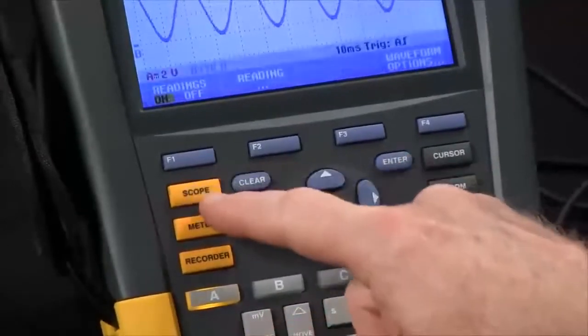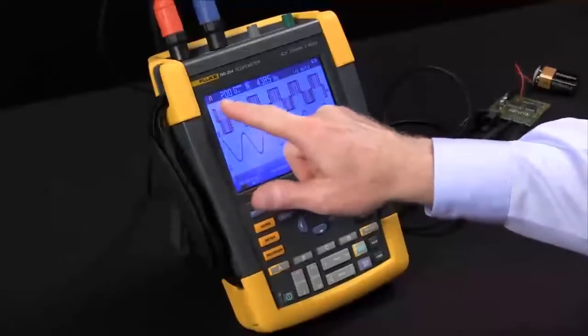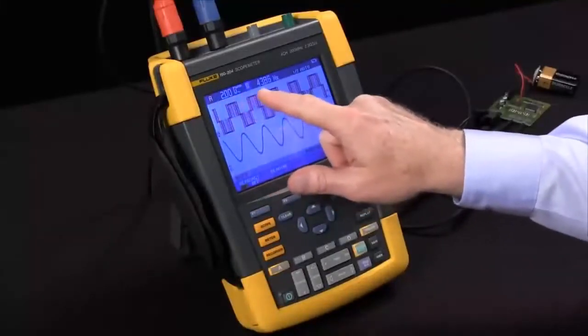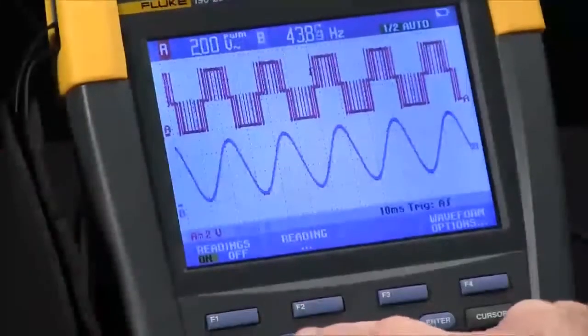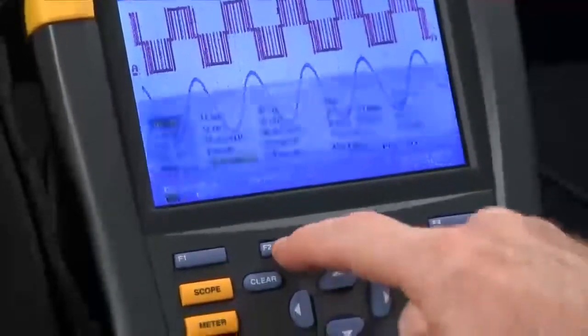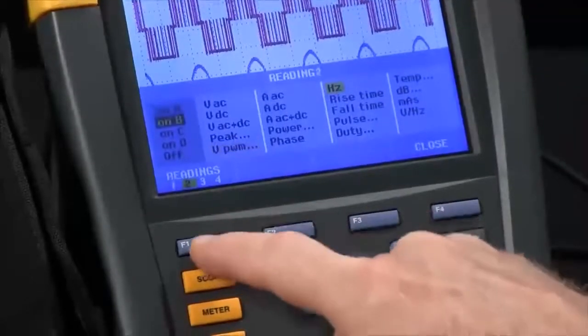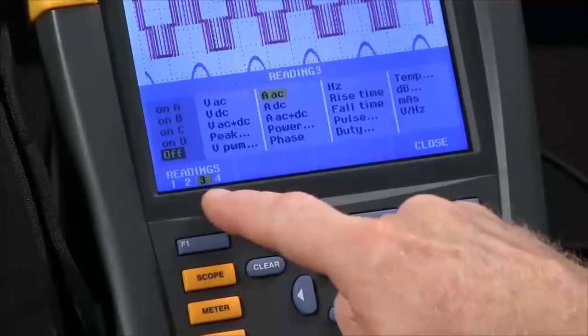We'll hit the scope button. Our readings are already turned on. We can see channel A set for volts PWM and channel B for frequency. We want to add a reading to that list. We'll hit the F2 button. We'll highlight the number three with F1. Right now, it's off.